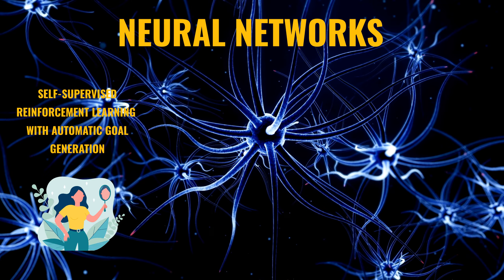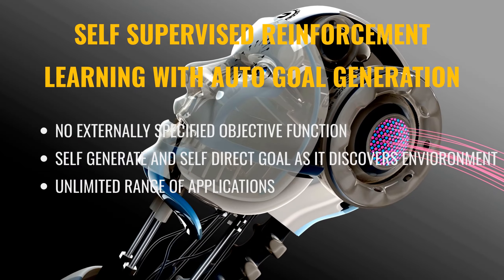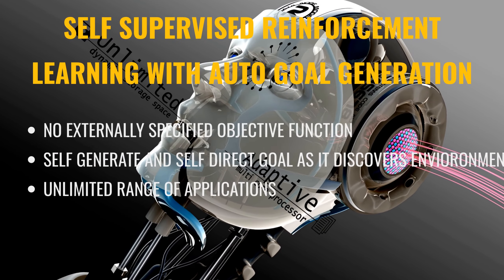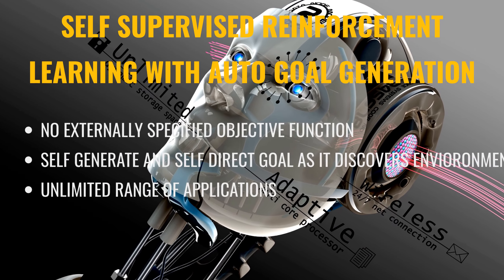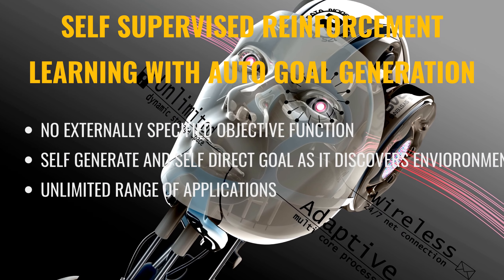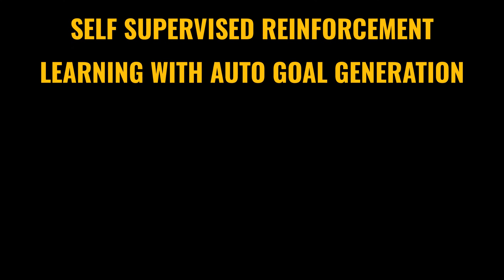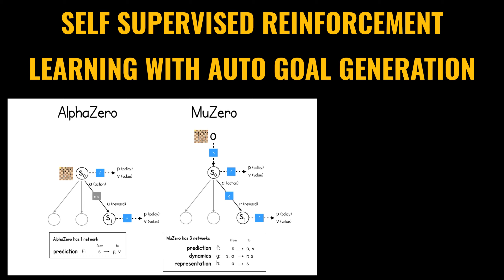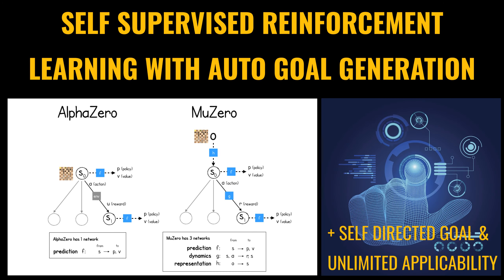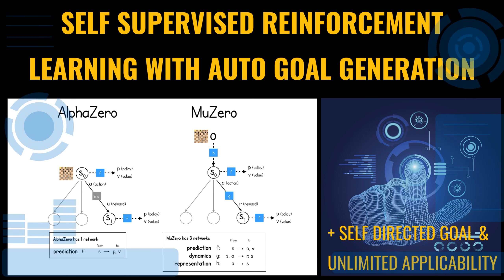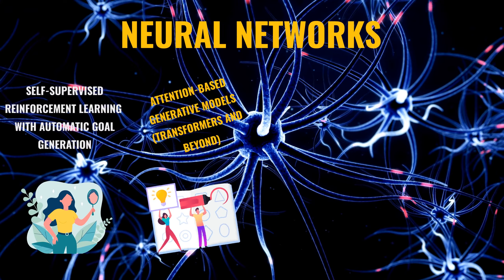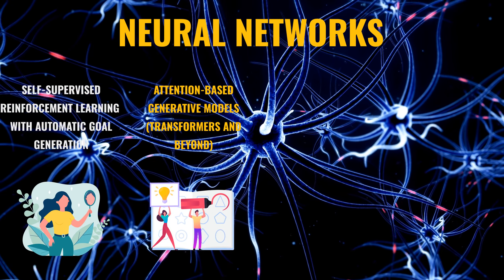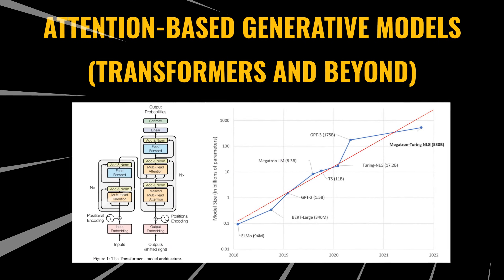One general approach to achieve AGI is with neural networks, which we have seen tremendous progress in over the past decade. The first possible path is to use self-supervised reinforcement learning, ideally with automatic goal generation. This means that instead of specifying a specific objective function, the agent will generate a goal or curriculum to learn as it discovers the complexities of its environment. We have already seen some rudimentary success of self-supervised agents like AlphaZero and MuZero. If we can reach a point where the agent can self-direct its learning goals and gain expertise over an unlimited range of applications, we would arrive at a general intelligent agent.